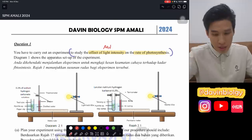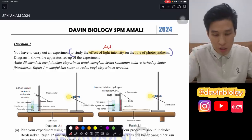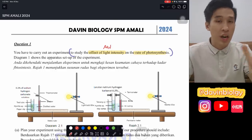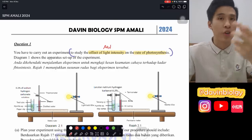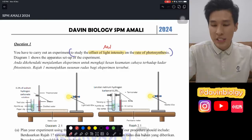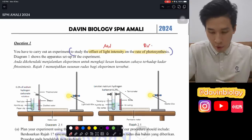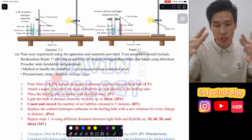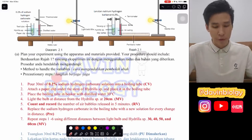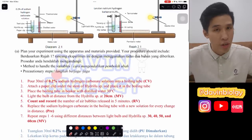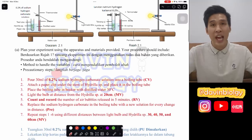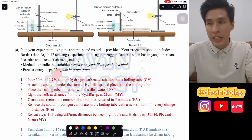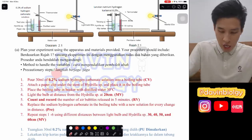If the manipulated variable is carbon dioxide concentration, you need to adjust the concentration of the sodium hydrogen carbonate solution - they will give you different concentrations. The responding variable is the rate of photosynthesis. For bio, most likely it will be a guided experiment, meaning they will give you the procedure. If they ask you to write the procedure, notes will be linked in the description below.